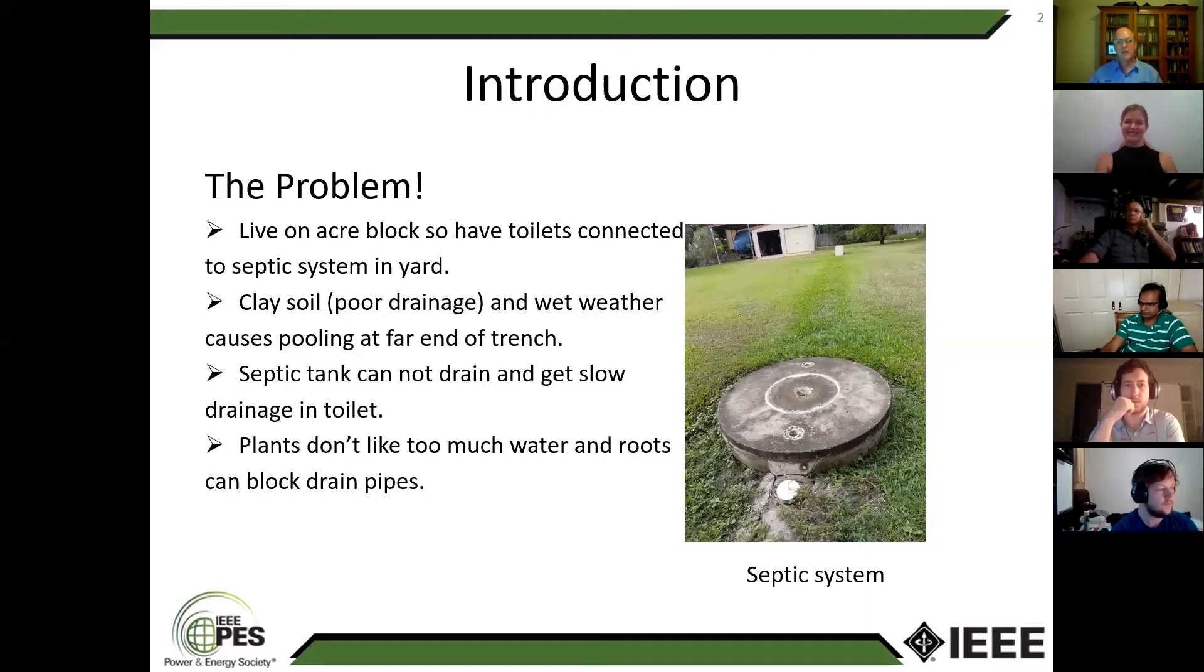I tried a few things initially when we first built the house to try and get around this problem. We tried planting some trees up the back around the end here where you get most of the puddling, but plants don't like getting their feet wet too often and so a lot of those die.